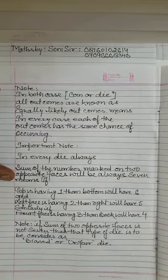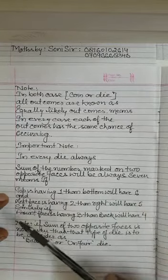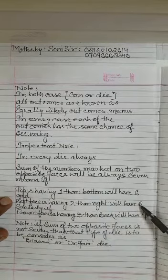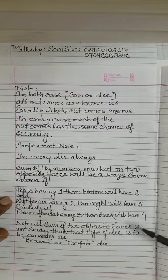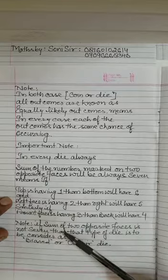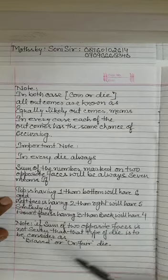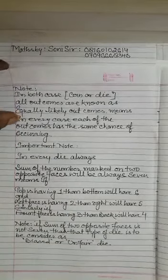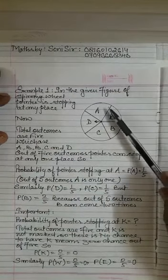Another important notice: in every dice, the sum of numbers marked on two opposite faces will always be seven. The top face having one, then the bottom will have six; left face has two, right will have five; front face has three, back will have four — total always seven. If the sum of two opposite faces is not seven, that die is considered biased or unfair, which we don't use.